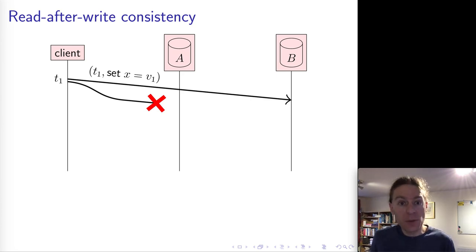It sends that update to both replicas of the database A and B. The replica B receives that update and processes it, whereas replica A is unavailable. And so the update is not processed by A.